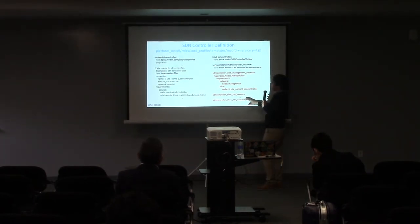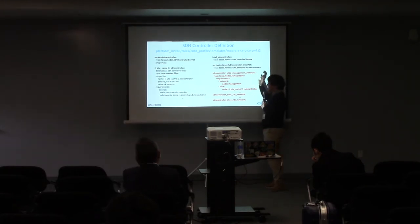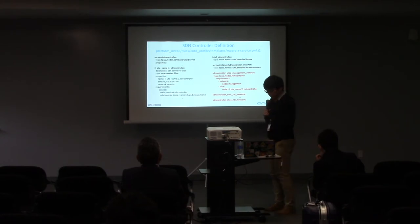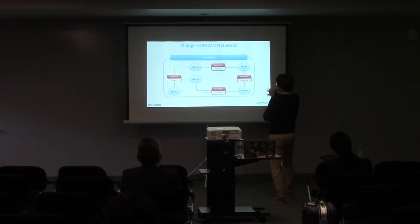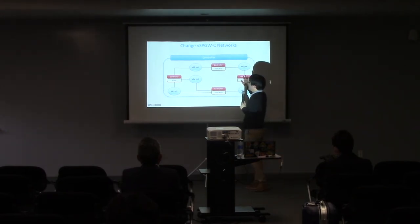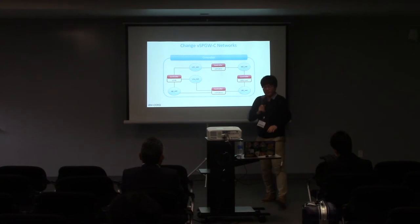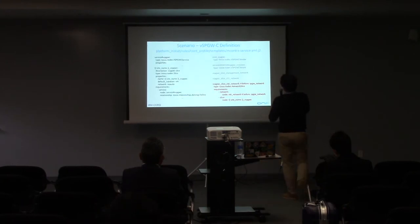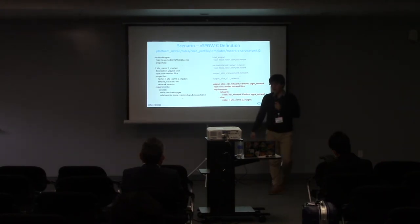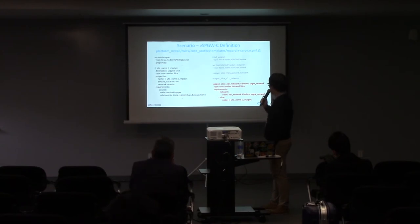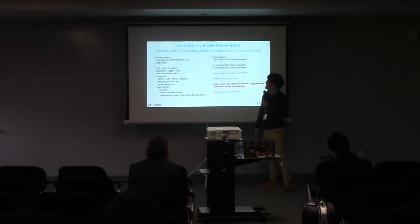The SDN controller uses the SBI network and NBI network. As a virtual network function, you should also define the management network for it. For the control plane, the SP Gateway interface is replaced by the NBI network — just replace from SP Gateway network to NBI network in the network slice. Likewise for the user plane, just change from SP Gateway network to SBI network.